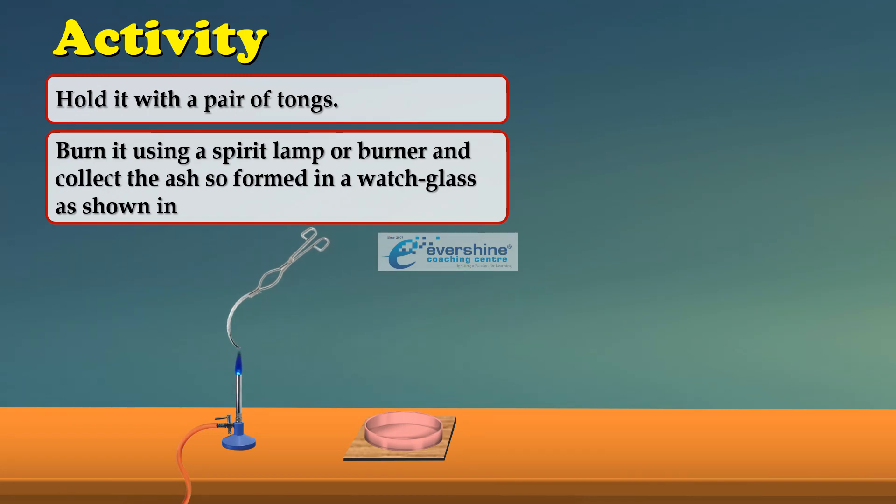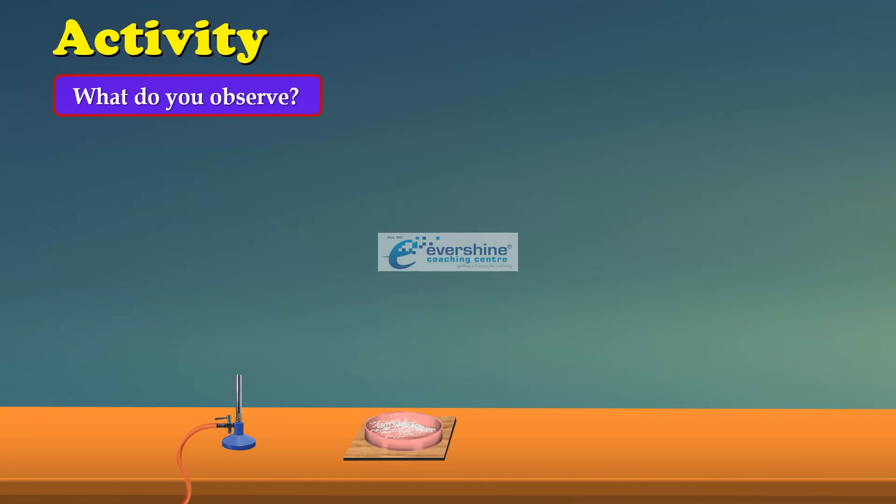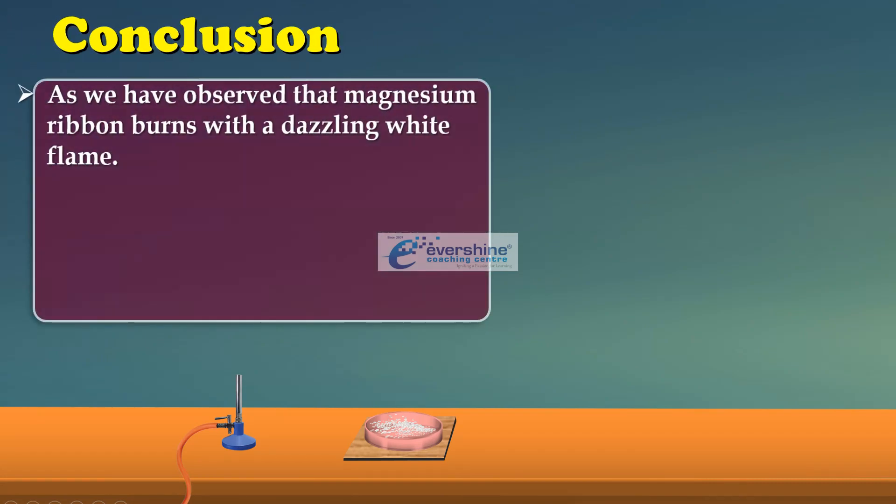Bring the Magnesium Ribbon near the flame. As we can see, it is burning with a white dazzling flame. And this is the watch glass. Now collect the ashes, which is produced after burning in the watch glass. When Magnesium Ribbon is burning, you can see a white color dazzling flame is produced. With white dazzling flame, it changes into white powder. This white powder is called as Magnesium Oxide.